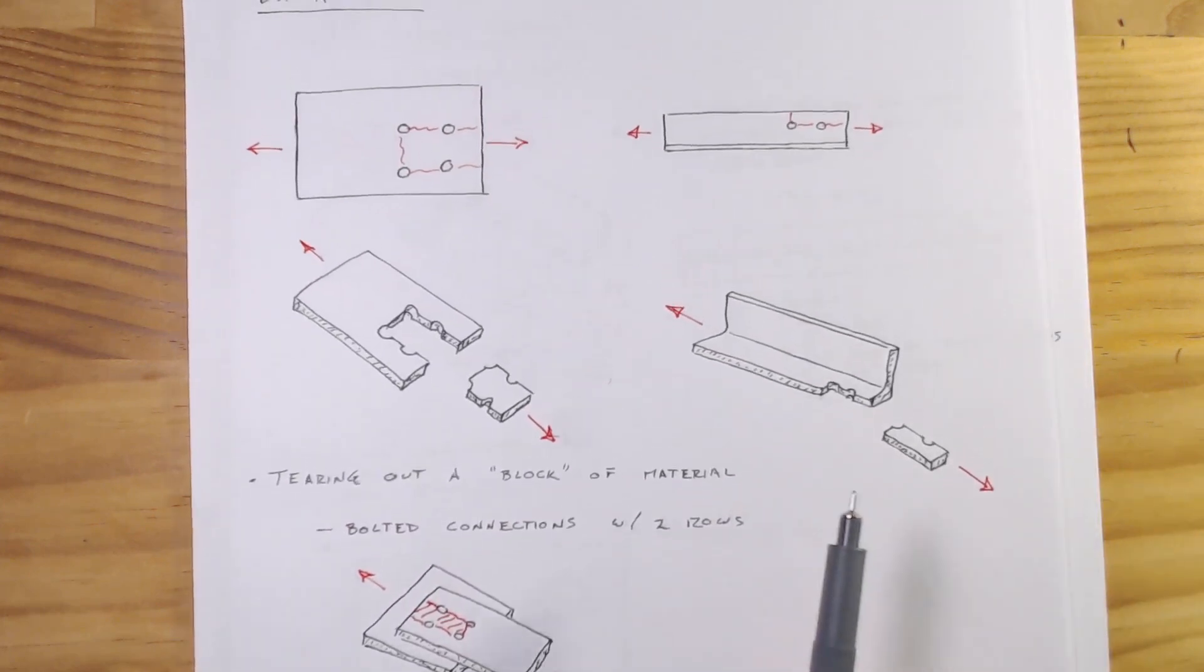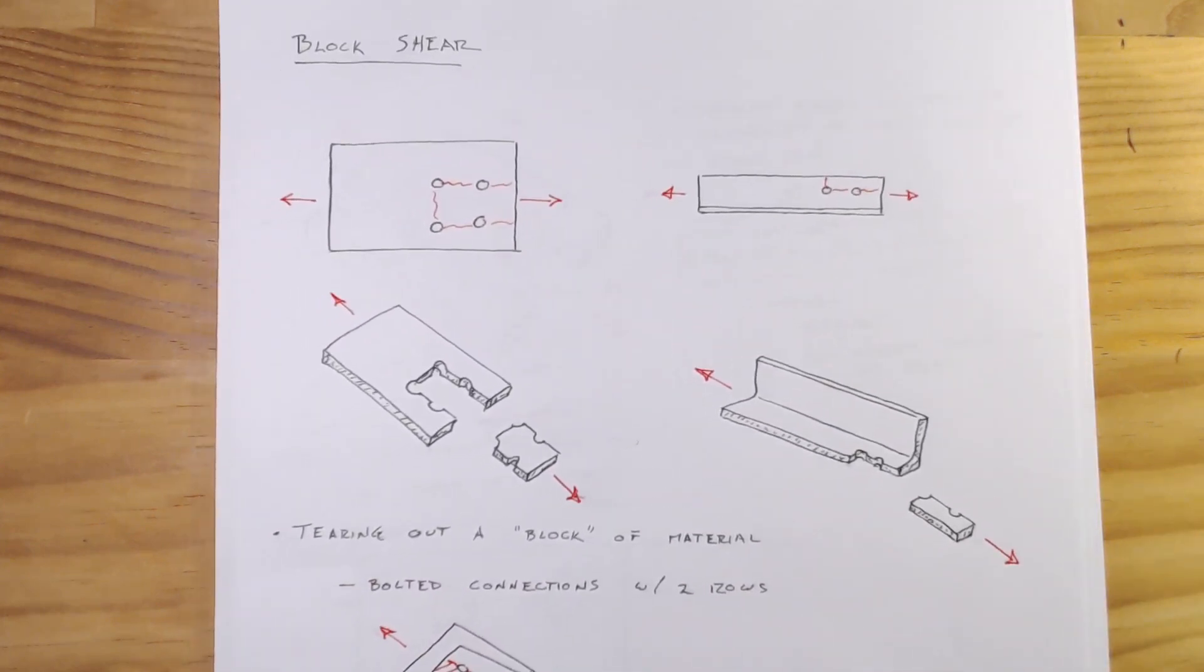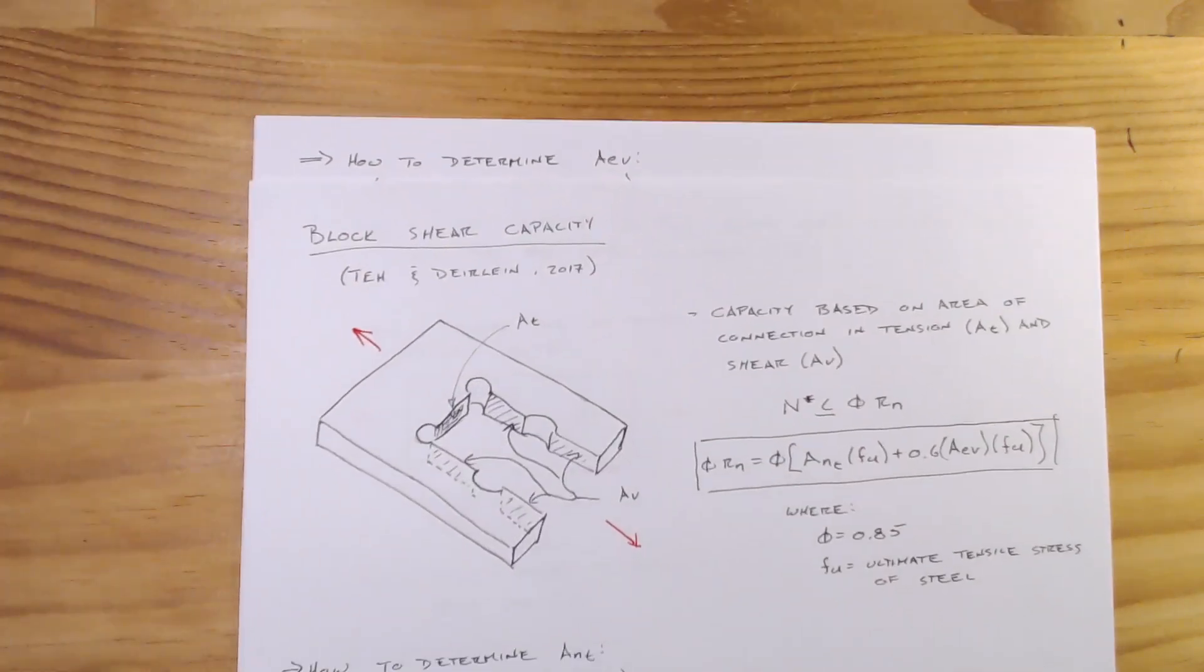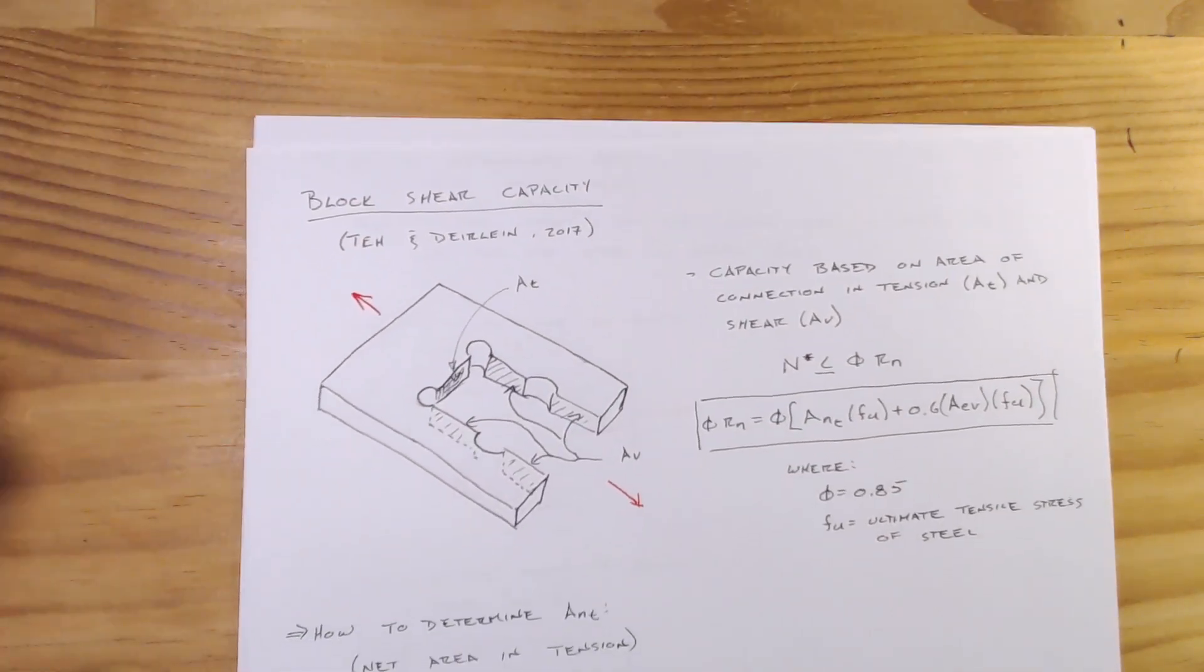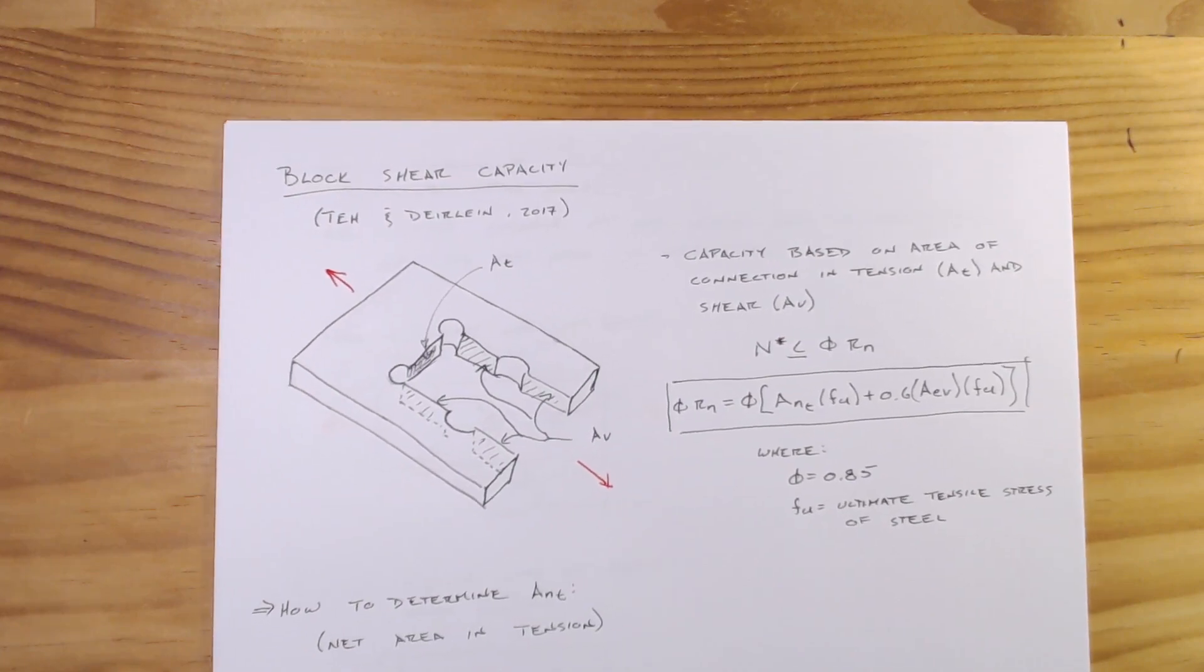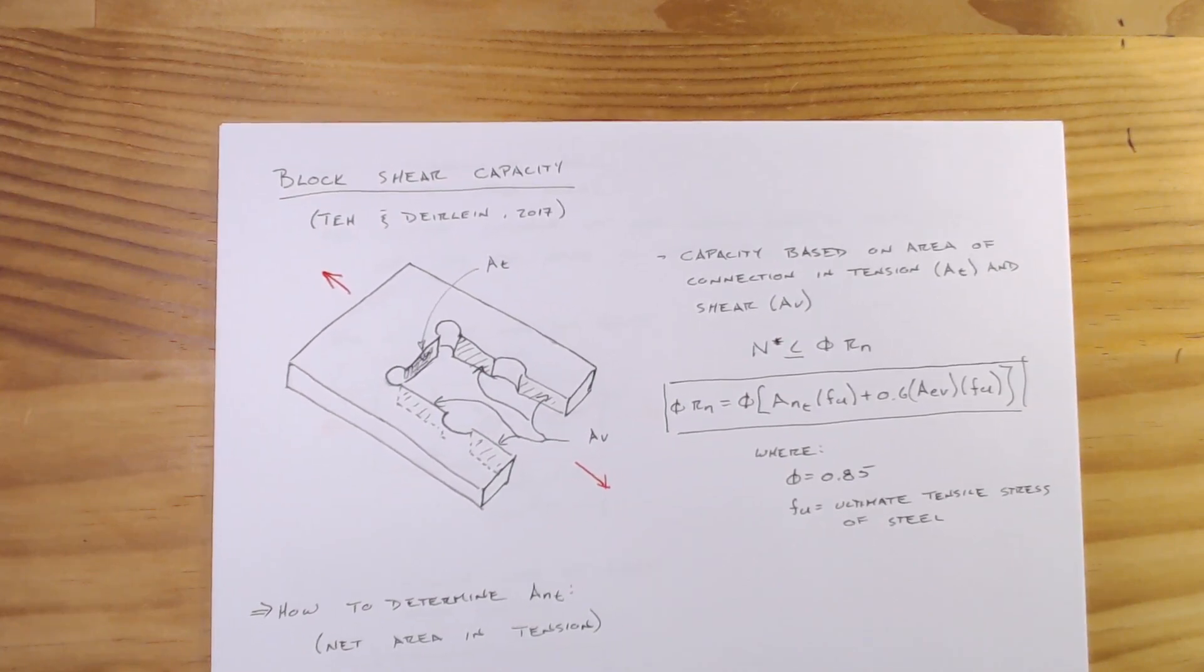So that's a brief overview and what it looks like, but how do we design for it? The designs we're going to use are based upon the work by Lip Tay and Greg Dierlein in 2017, and these equations are going to be utilized in the upcoming version of NZS 3404.